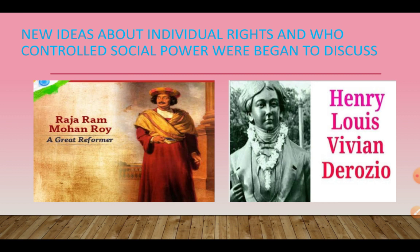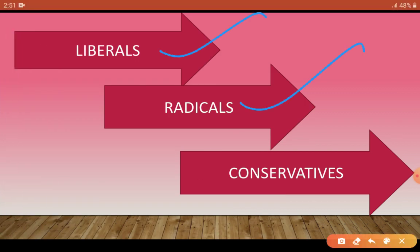Some people said there should be a complete transformation of society and it should be changed entirely. But some others said no, there is no need to change society, let it continue as it is. And some others said changes should happen, but sudden complete transformation is not the right thing — changes should happen gradually, so that people can adjust themselves according to those changes.